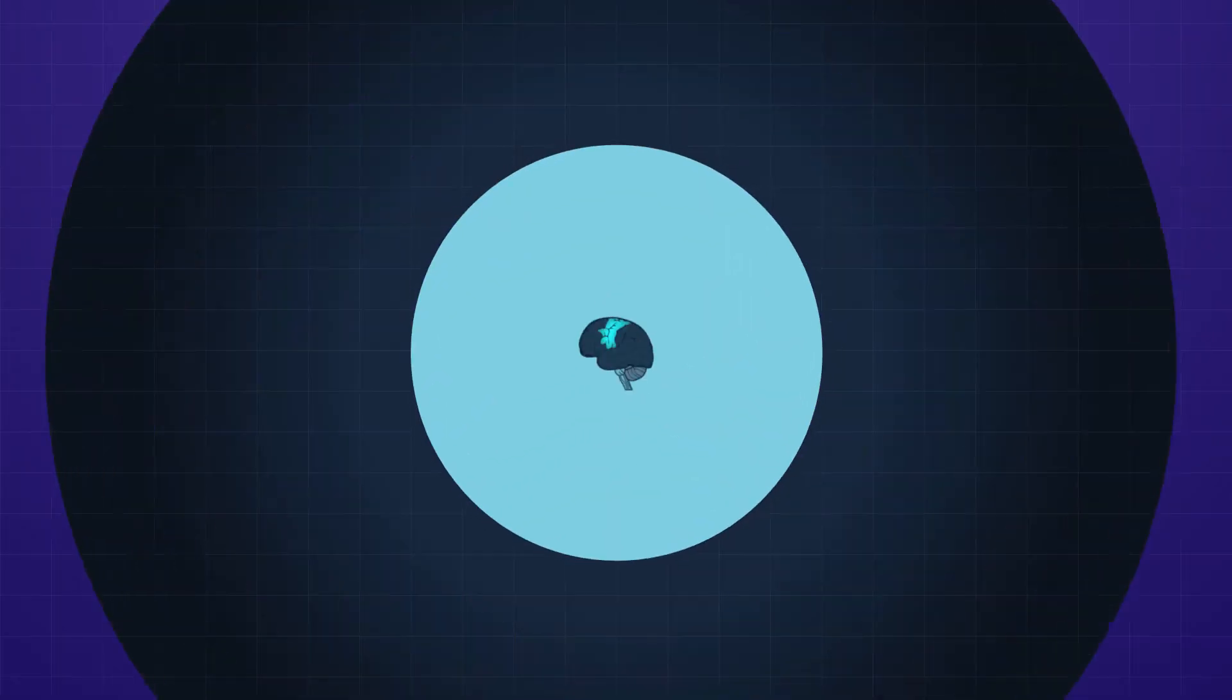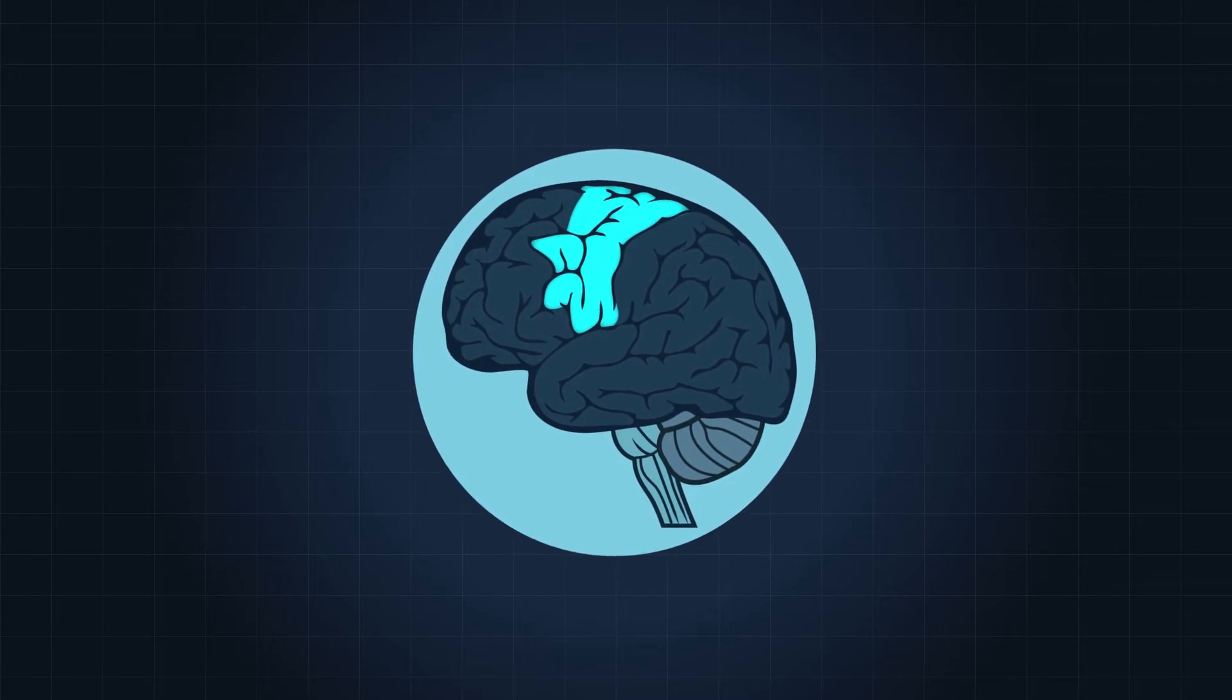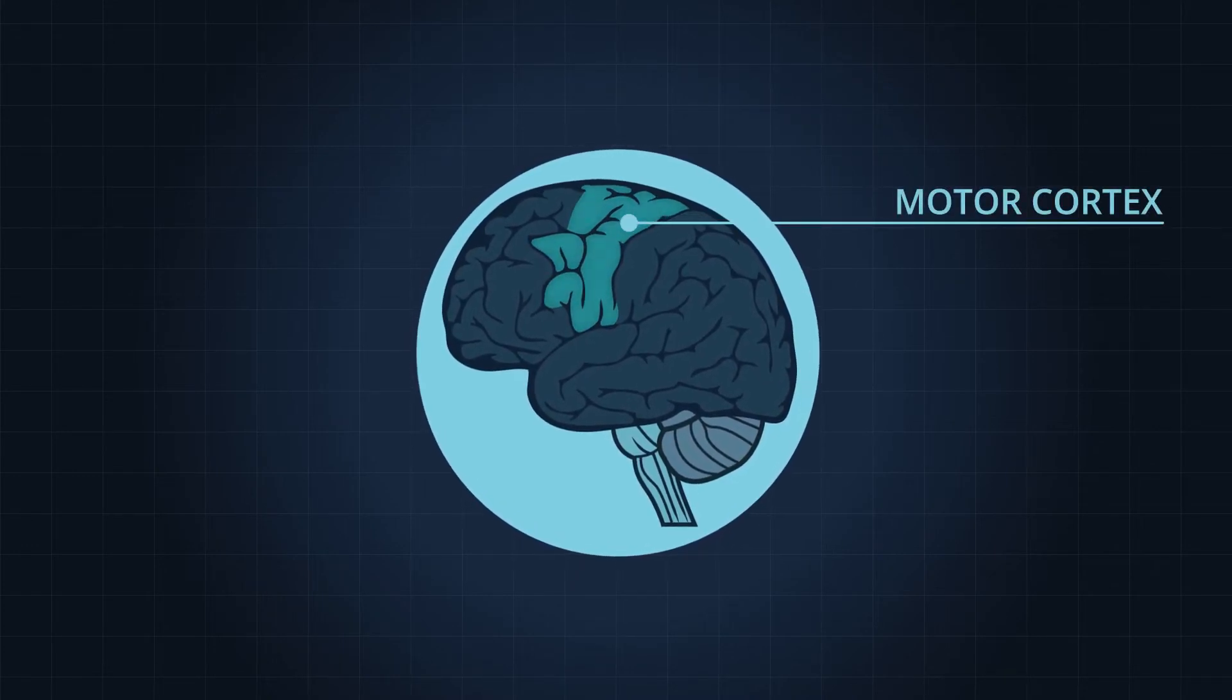To understand this medical condition, first we have to understand how normal speech works. Let's imagine you want to speak a certain word. The motor cortex is where movements are initiated.